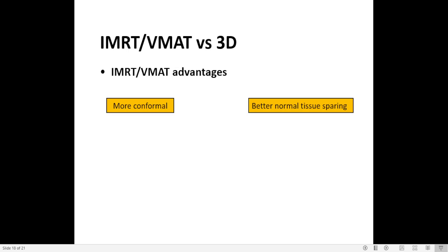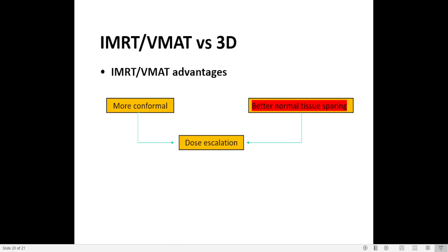So why, with so many disadvantages, do we use intensity modulated radiation therapy? Because of the advantages. We have more conformal dose distribution, especially for complex targets, and much better normal tissue sparing — that's the biggest advantage of IMRT and VMAT versus 3D. We can also do dose escalation. With dose escalation, it is extremely important to reduce systematic and random errors, to have good machine and patient QA in place, and a good IGRT system. Everything together will allow high doses to be precisely delivered to the target.